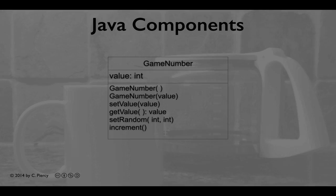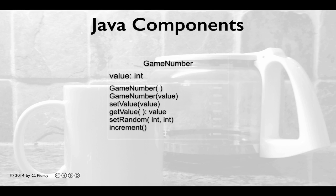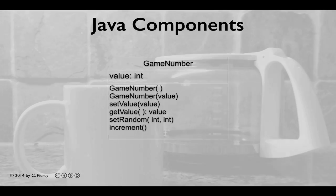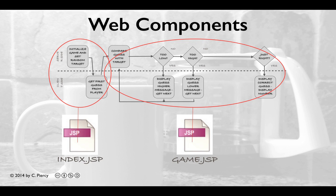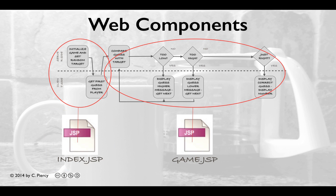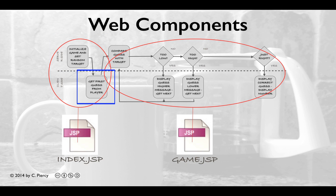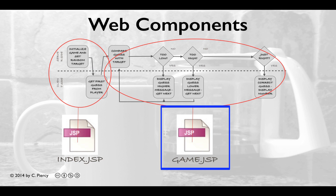For our design, we're going to use three components to build this game. One, discussed in a separate video, was the Game Number class, used to represent the numbers in the game. To control the actual gameplay and to present the views, we're going to use JSPs. We'll create two JSPs — Index.JSP and Game.JSP. Index.JSP is responsible for initializing the game and setting up the random target, then presenting the user the ability to put in their first guess. The rest of gameplay will be turned over to the Game.JSP component.